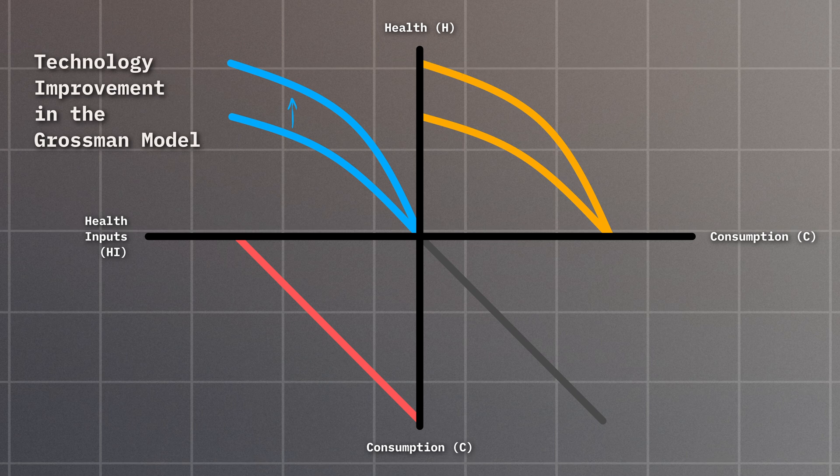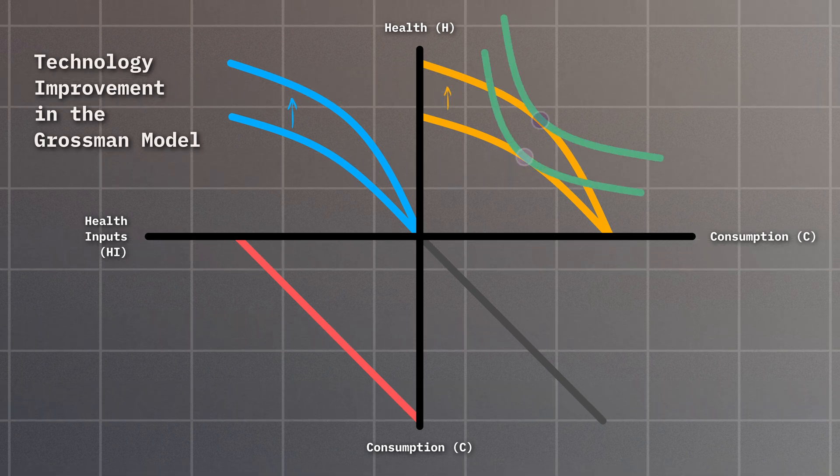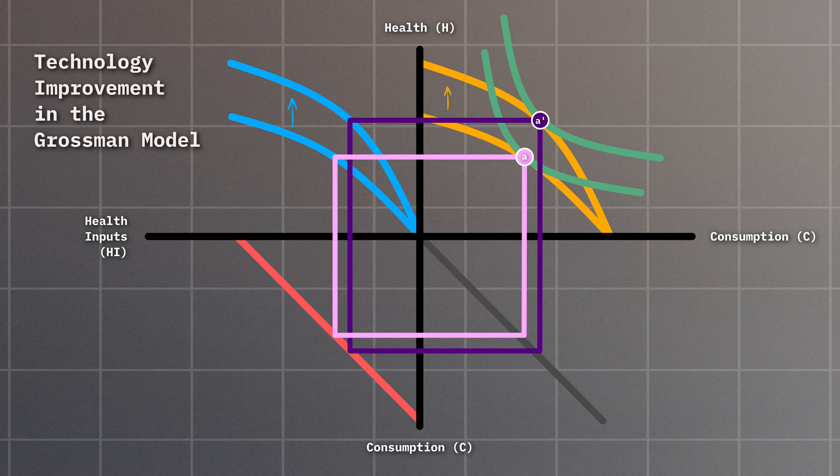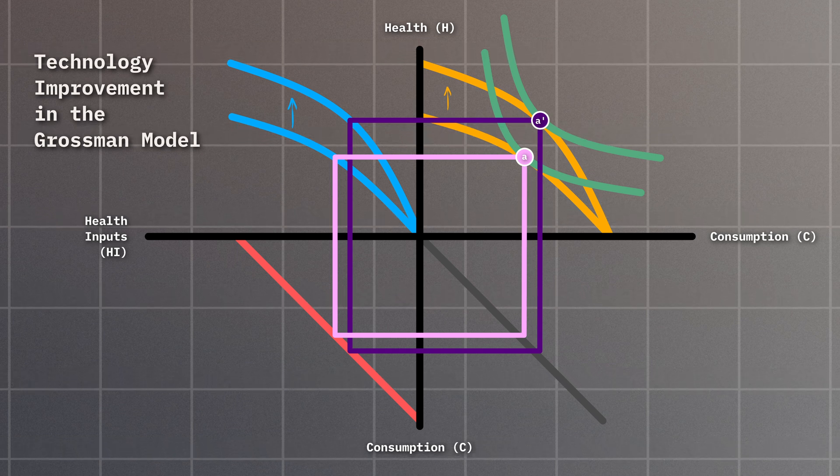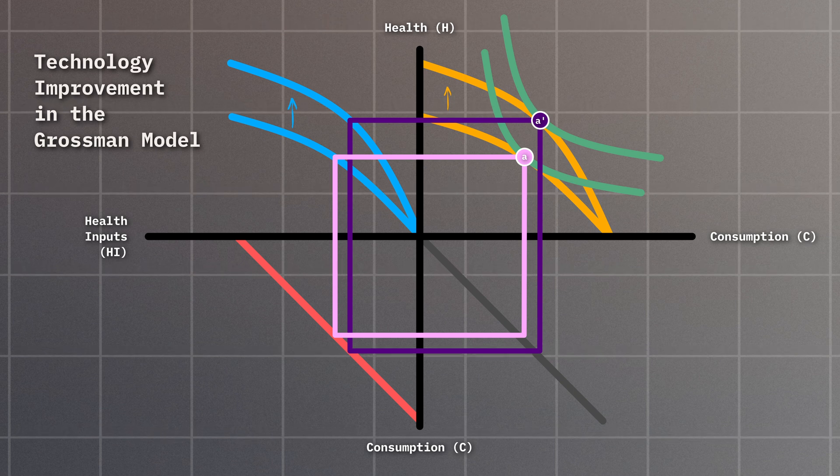Simultaneously, our consumption possibility curve will go up as well, causing individuals to have higher levels of health while using fewer health inputs. In essence, this scenario shows how we're getting better at producing health, which we can also achieve by improving education levels.